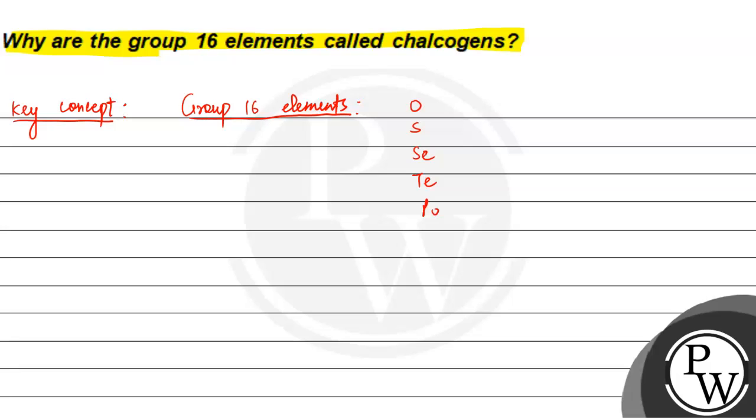One more element is Livermorium. Now, further talk about why chalcogens is known as chalcogens. The reason is basically that the name is derived from the Greek word.